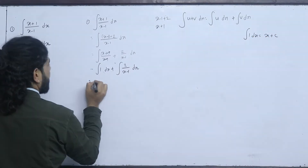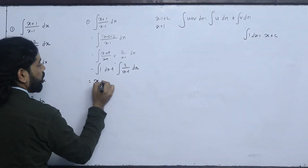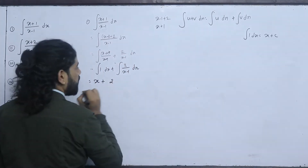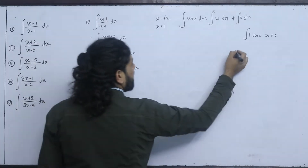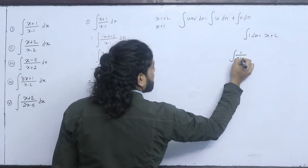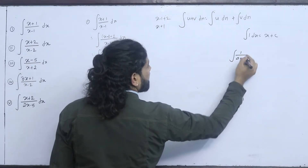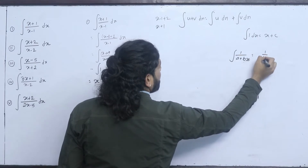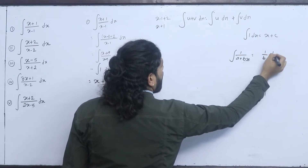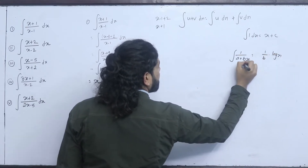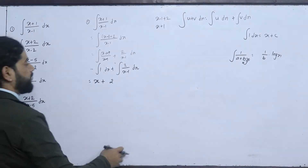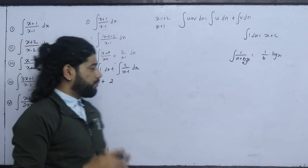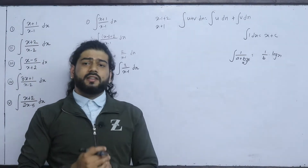This gives x plus c. For the term 2/(x-1) dx, we apply the formula: integral of 1/(a+bx) dx equals (1/b) log(a+bx). This is the x-coefficient. This was explained in the previous class. Now, if you know the concept of integration, this is the solution.